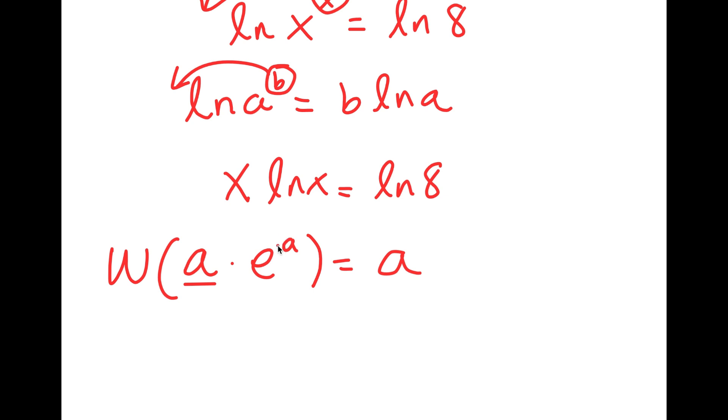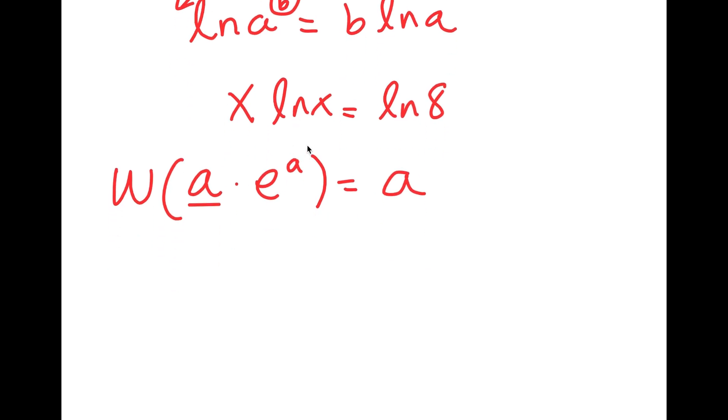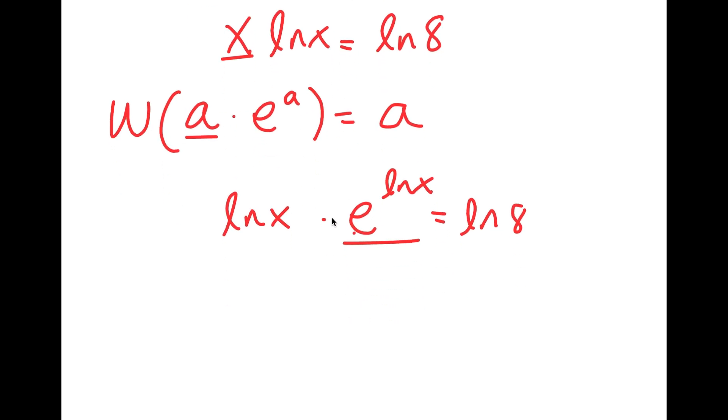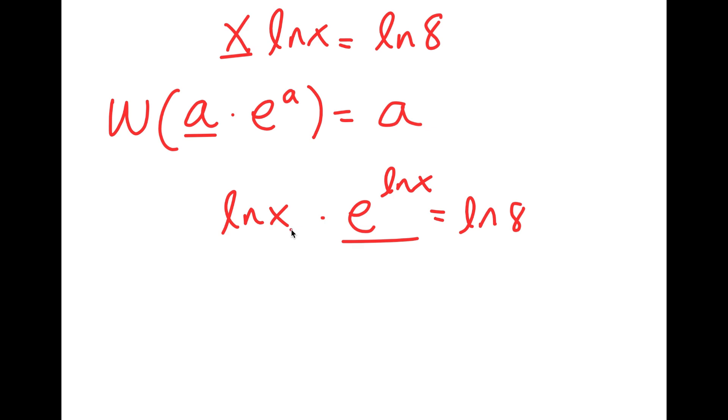So in this case, I'm going to rewrite this as ln x times e to the power of ln x is equal to ln 8, because x is the same thing as e to the power of ln x.